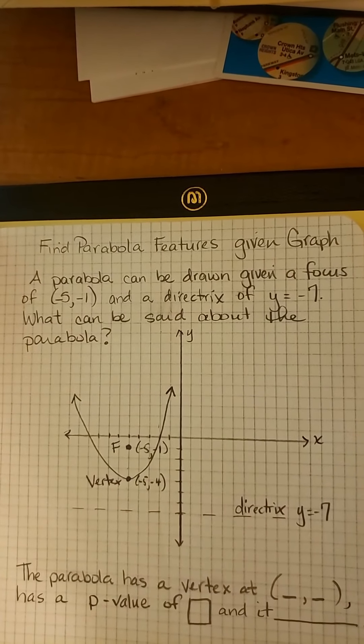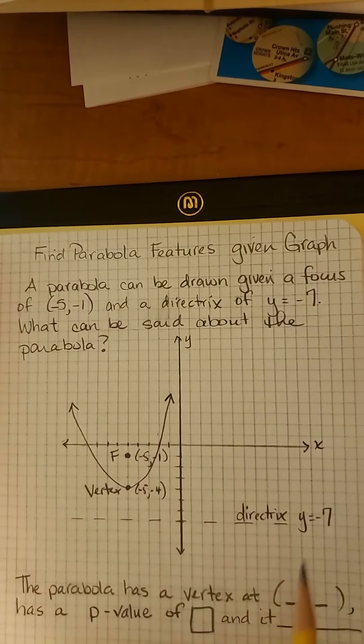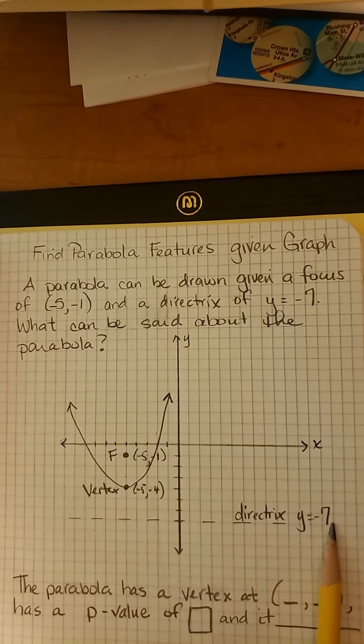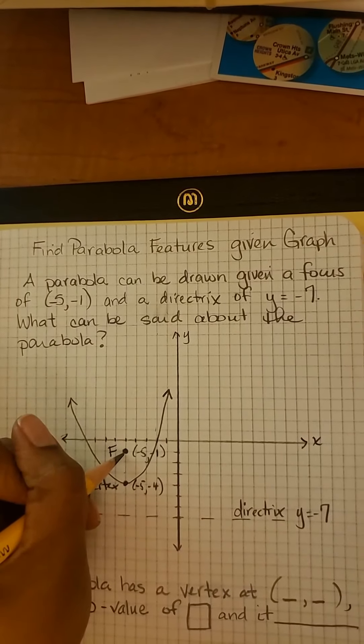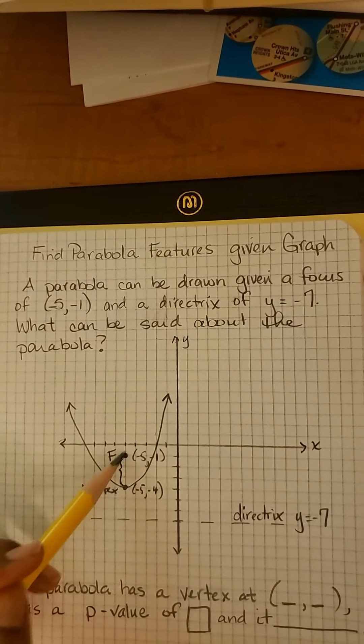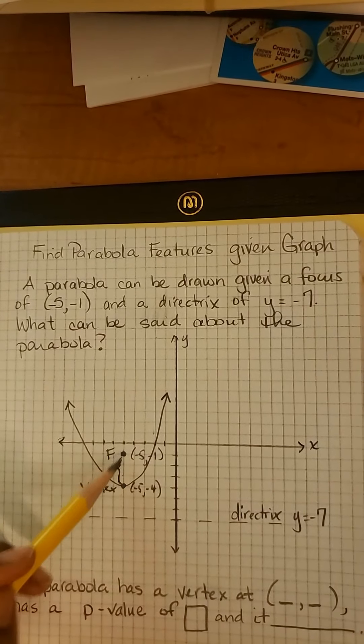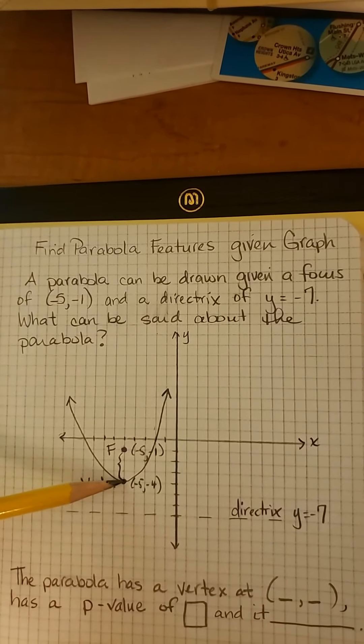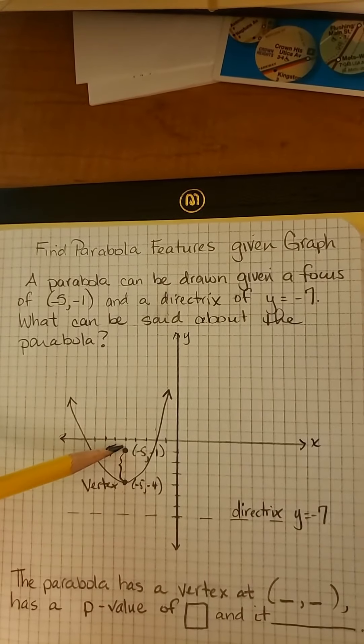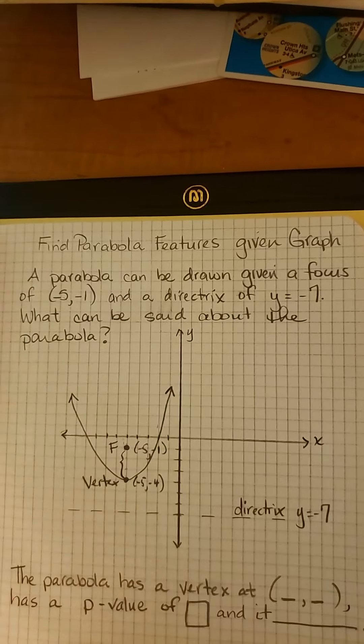My vertex is (-5, -4). The focus is (-5, -1) and the directrix is y equals -7. So what's my p? The p is the distance between the vertex and the focus. Since we go up to get to the focus, p is positive. And 1, 2, 3, p is positive 3.